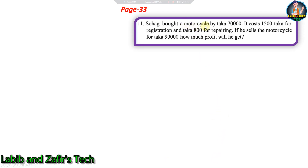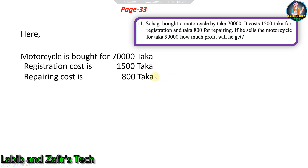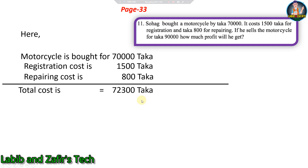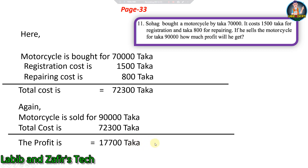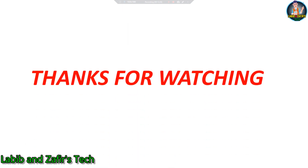Final problem: Shohak bought a motorcycle for taka 70,000. Registration cost taka 1,500 and repairs cost taka 800. If he sells the motorcycle for taka 90,000, how much profit will he get? We add the total cost: 70,000 plus 1,500 plus 800 = 72,300 taka. Selling price is 90,000 taka, so profit = 90,000 minus 72,300 = 17,700 taka.